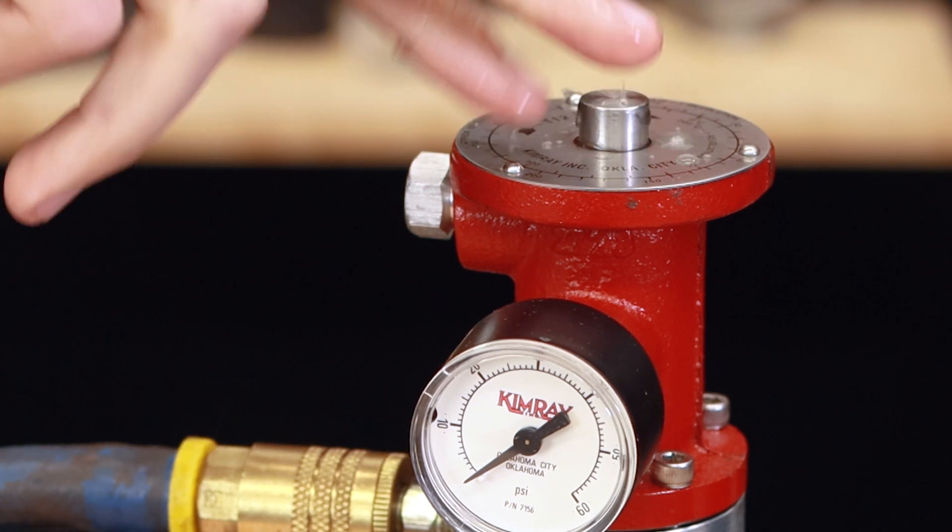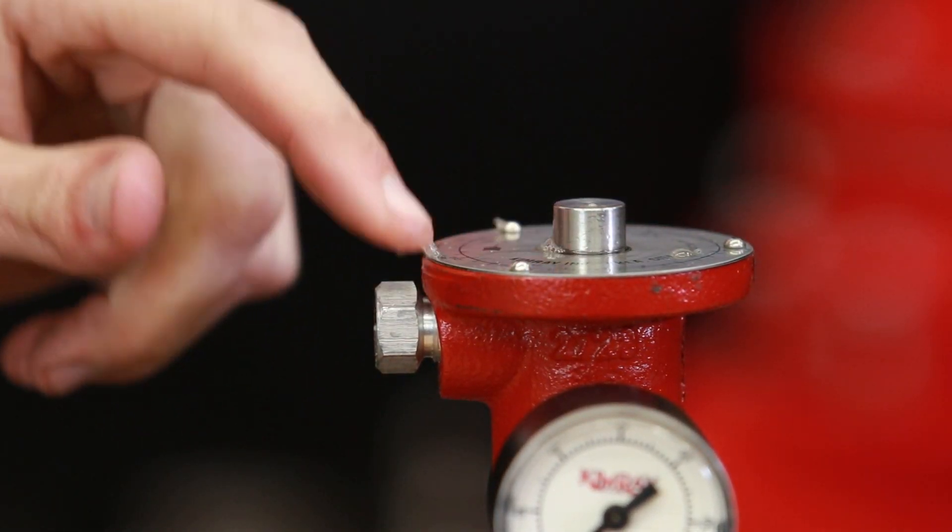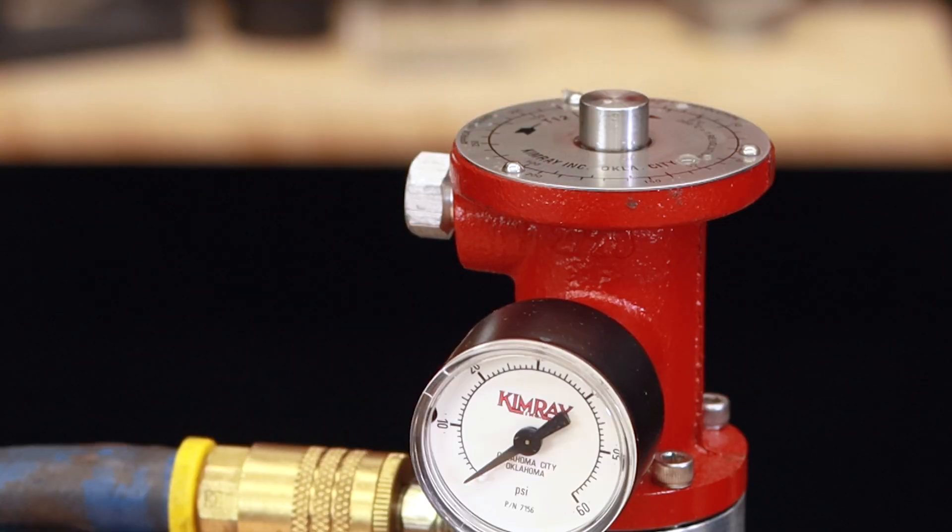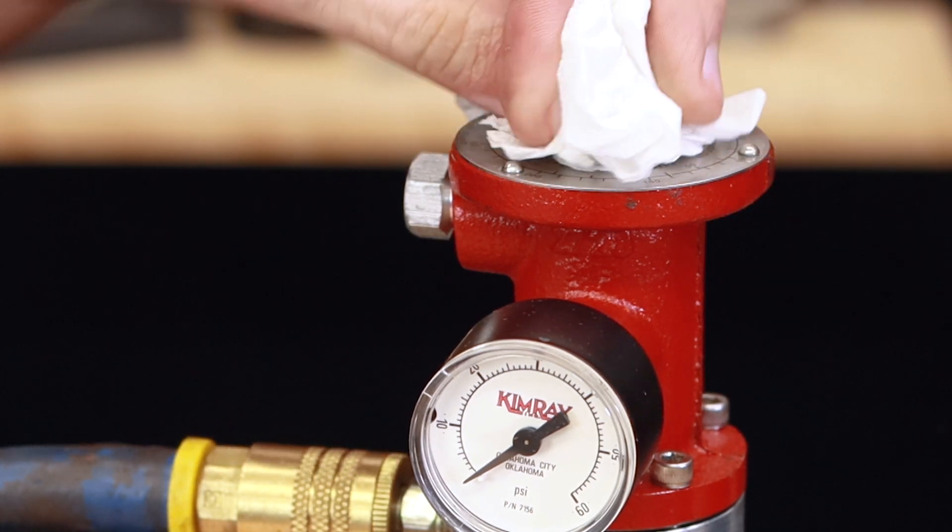Check for air leakage around the seat with a soapy solution. There should only be a slow bubble blowing from the soap solution. This checks the seal of the pilot plug on the seat. After cleaning the soap off the seat, turn the seat clockwise until the output pressure equals the supply, which is 30 psi.